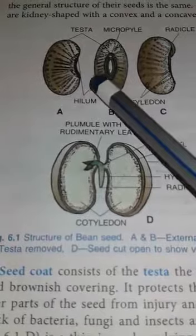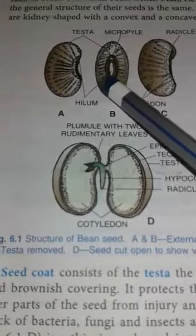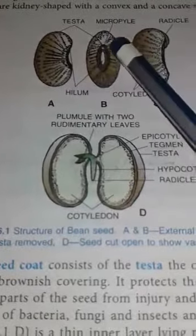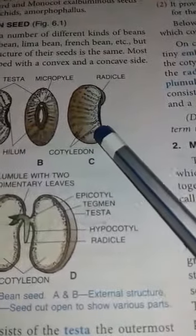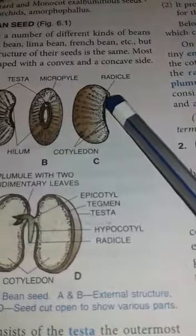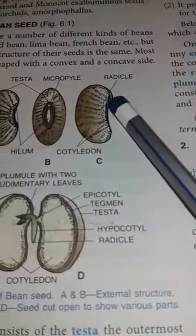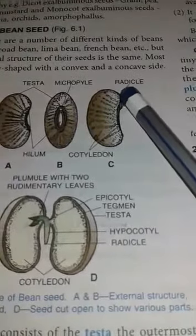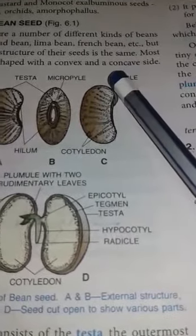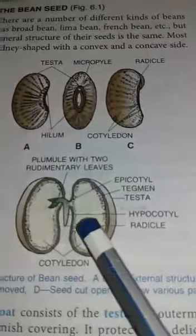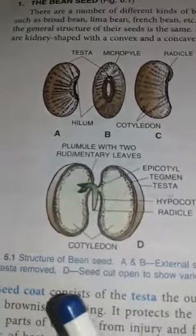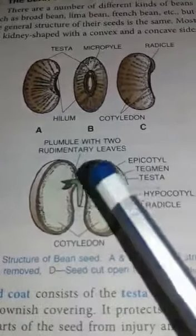During the process of fertilization, entry of the male part — especially the pollen tube — also goes inside through the micropyle. When the seed just starts germinating, it gives rise to the radicle and plumule. The radicle gives rise to the root system and the plumule gives rise to the shoot system. In the next diagram of the bean seed, two cotyledons are shown.